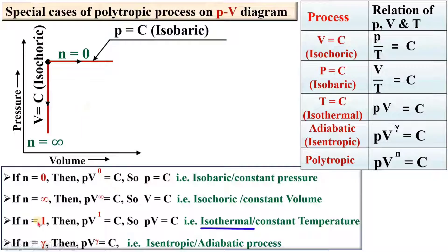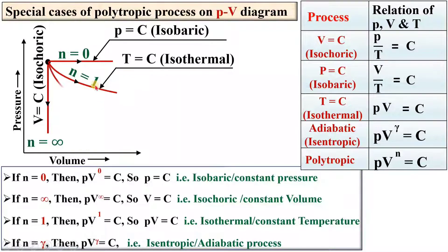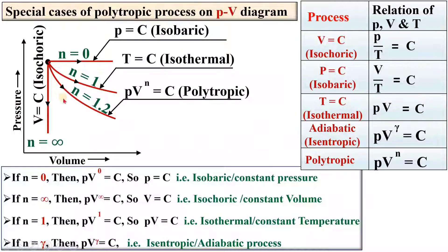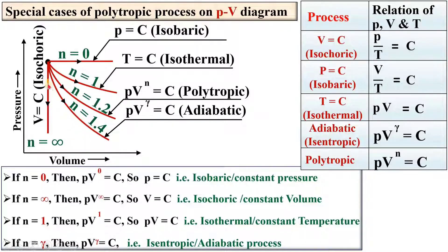Now, drawing the isothermal process on the PV diagram: n equals 1, and it must lie between n equals 0 and n equals infinite, so the curve for n equals 1 represents the isothermal process. If I draw one more process between n equals 1 and infinite, say n equals 1.2, that is called the polytropic process. Drawing one more process where n equals 1.4, that will be the adiabatic process — keep in mind that n equals 1.4 is the adiabatic index. Any process drawn between these curves is also a polytropic process.